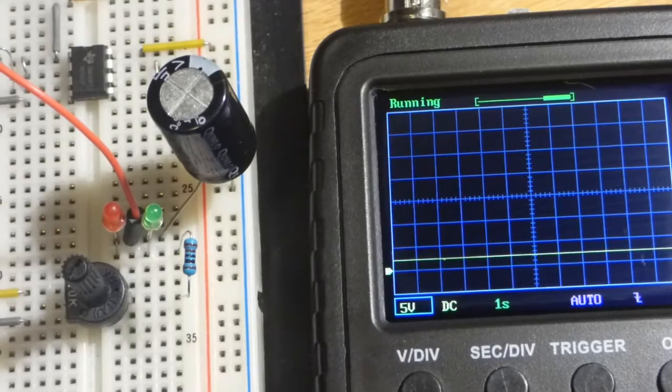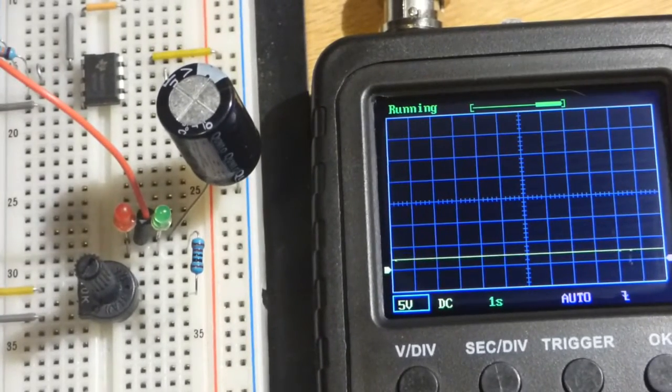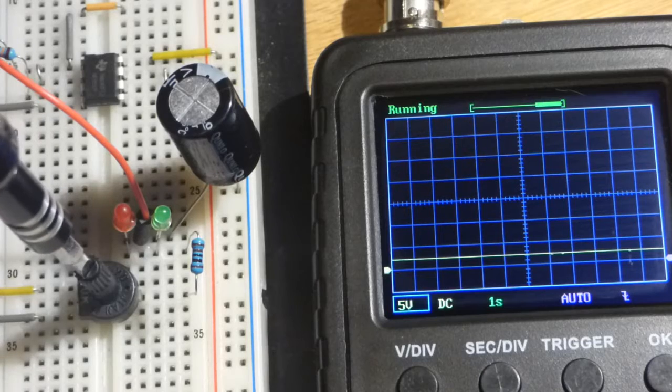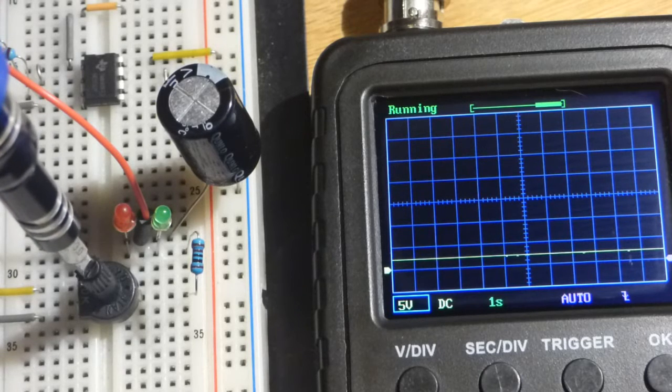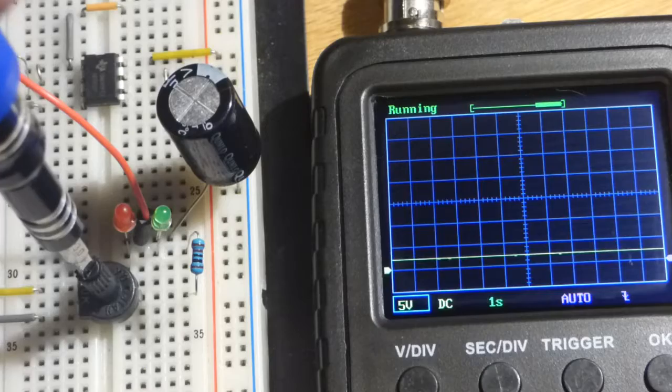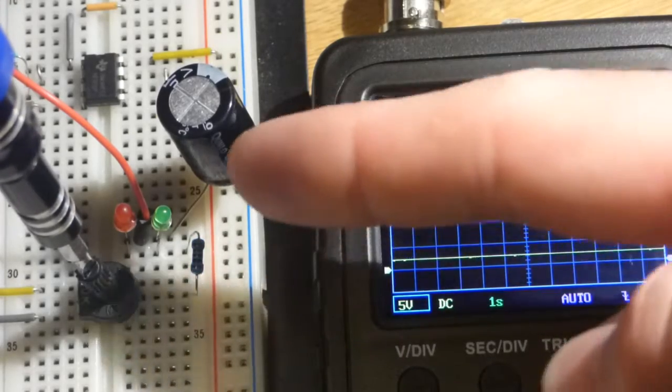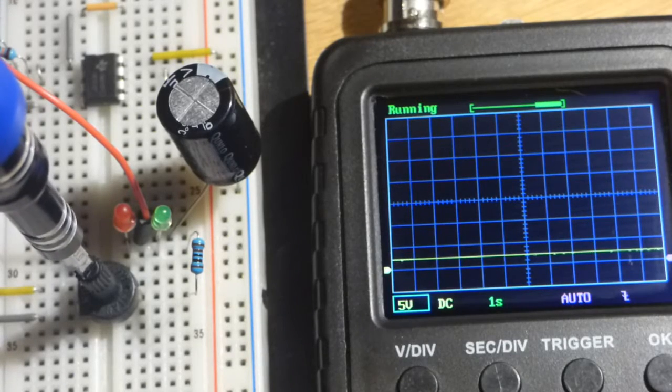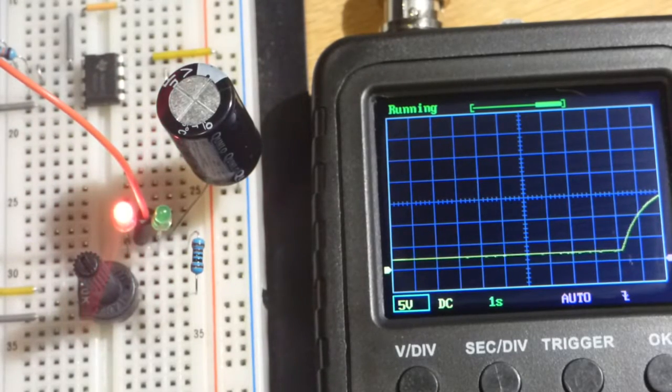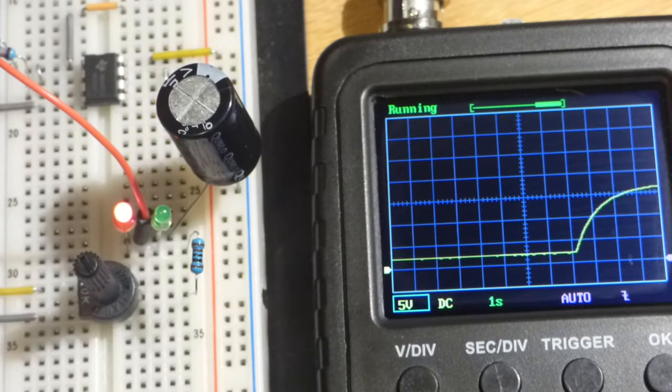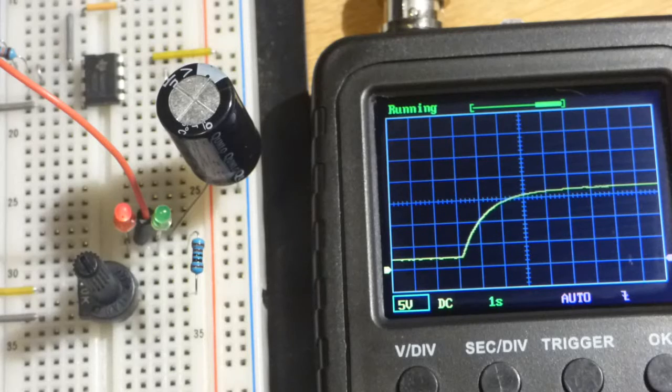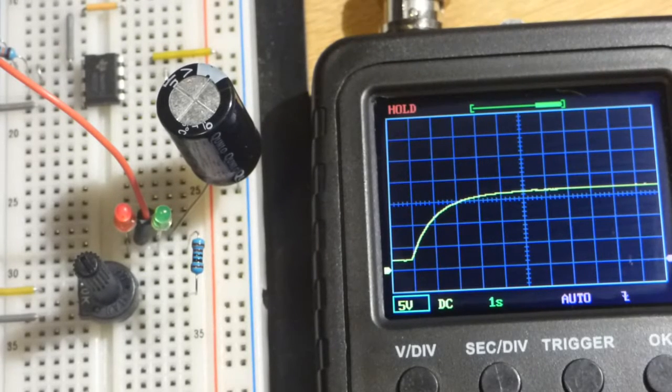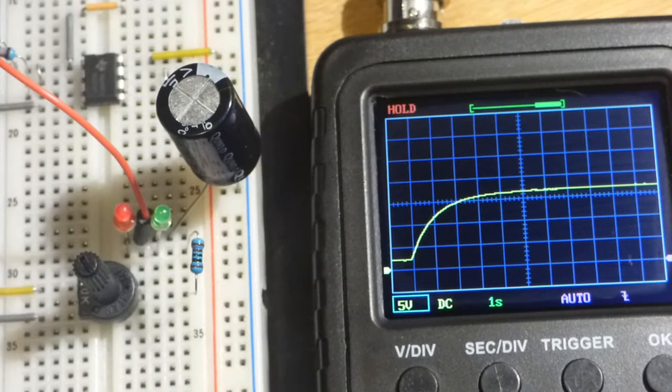It's holding at two volts, which is what it looked like on the display. Let's now do the opposite. We did the discharge and saw that curve. Now we're at zero volts for the trim pot, but there's a two volt difference between the output of the trim pot and the capacitor.